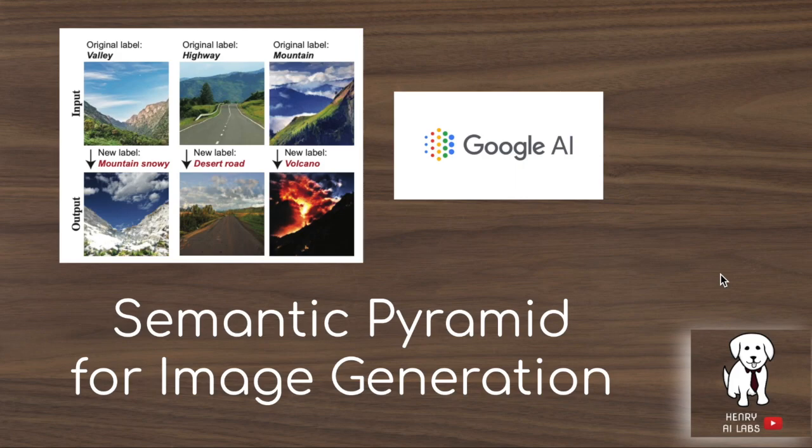Thanks for watching this explanation of Semantic Pyramid for Image Generation — a really interesting new model that embeds features from pre-trained image classification networks into the generative process of a generative adversarial network. This is really useful for semantic image composition, image relabeling, and visualizing what's in pre-trained feature maps of classification networks. Thanks for watching and please subscribe to Henry AI Labs for more deep learning and AI videos.